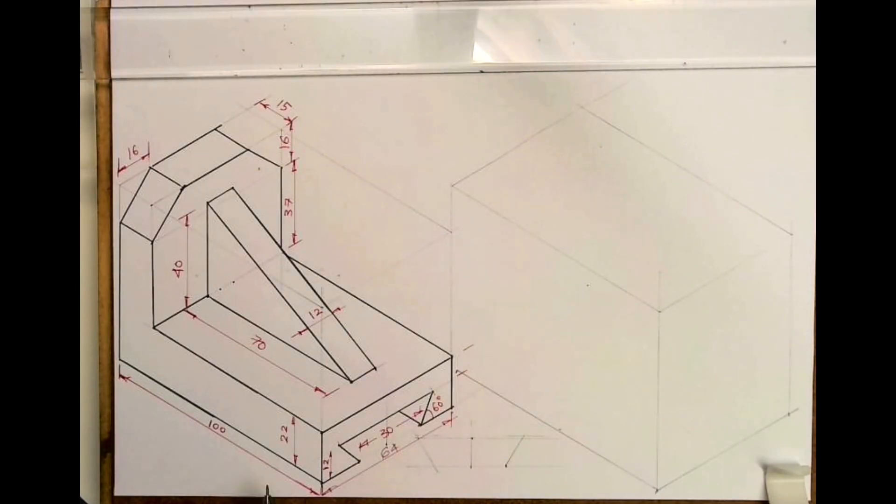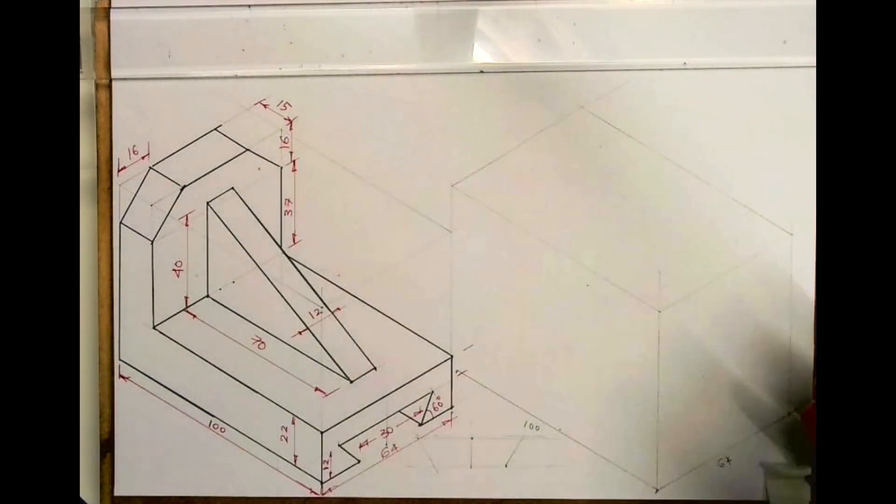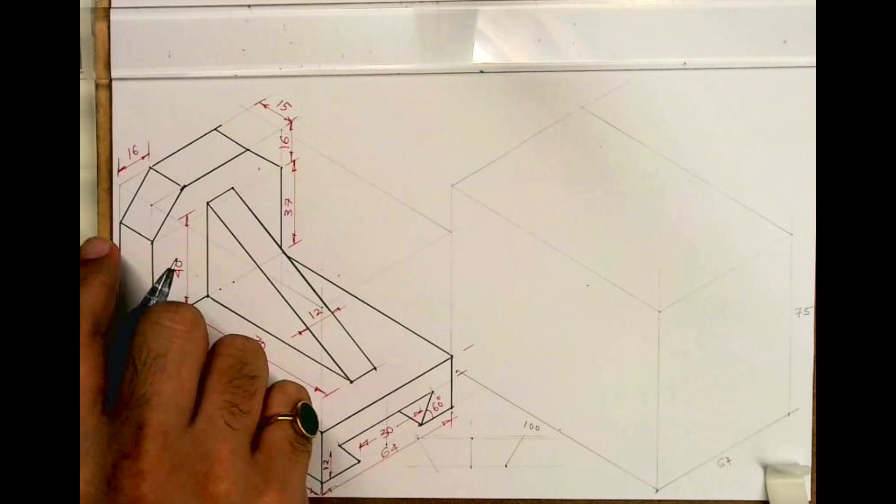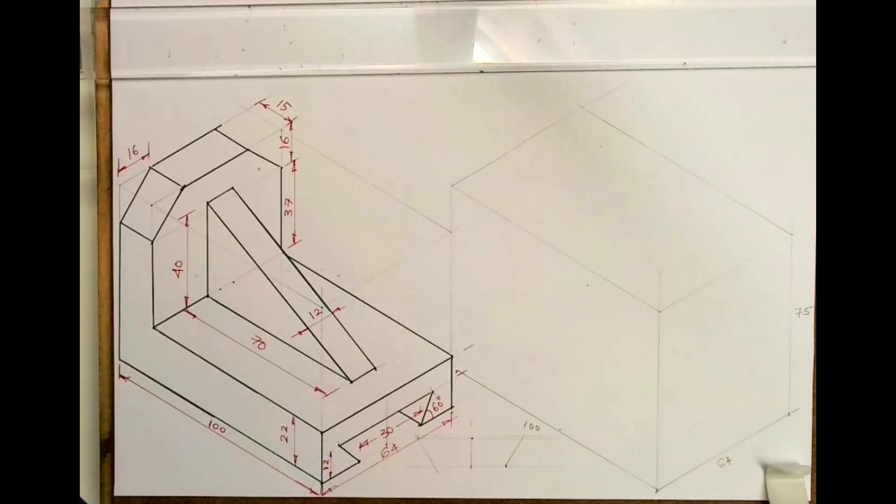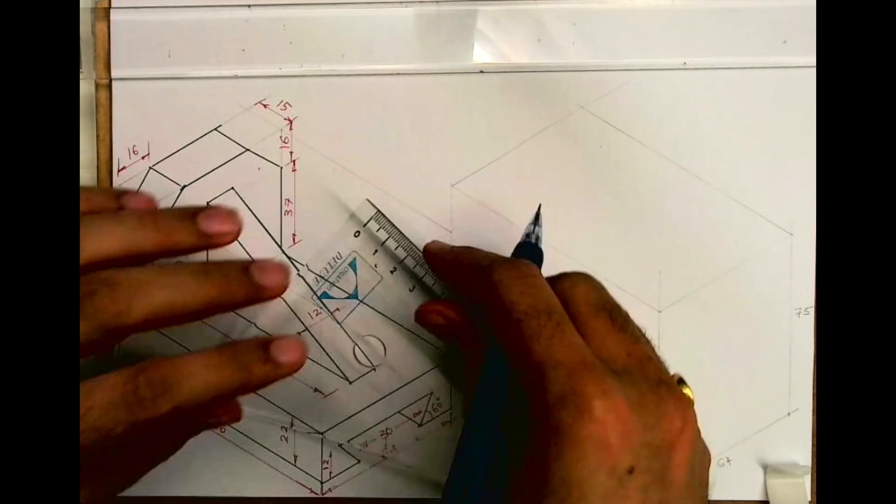Welcome to technical drawing. Today we'll see this sum in copy iso. Length is 100, width 64, and height is 22 plus 37 plus 16, which equals 75. So first we'll start with this L-shape. It's given 15 over here, so I'll mark 15 and this is 22.